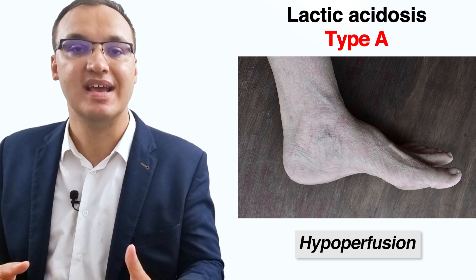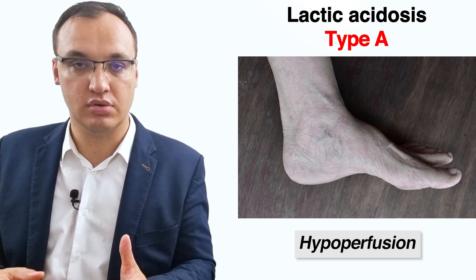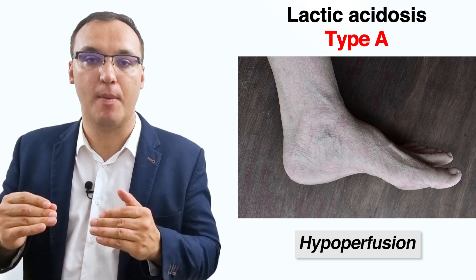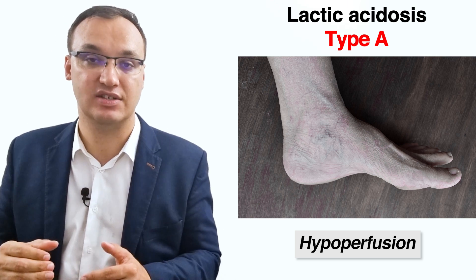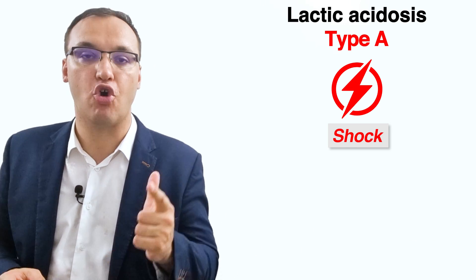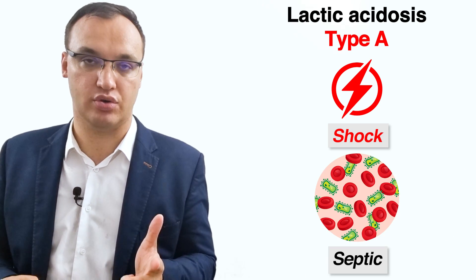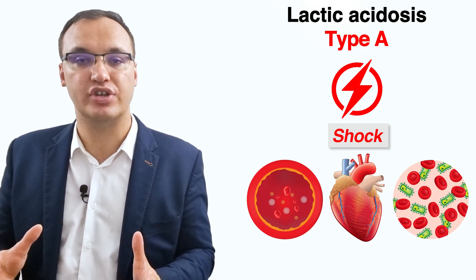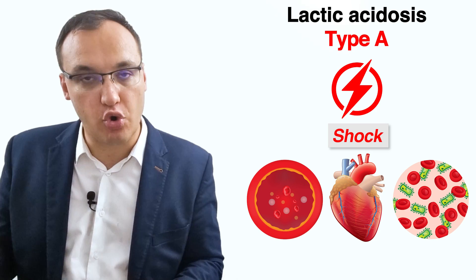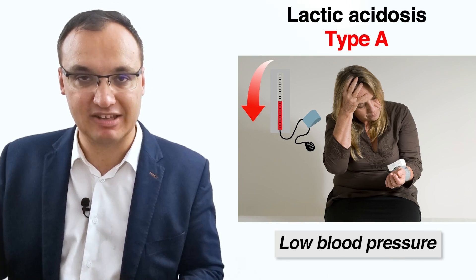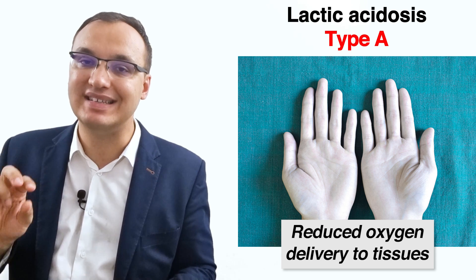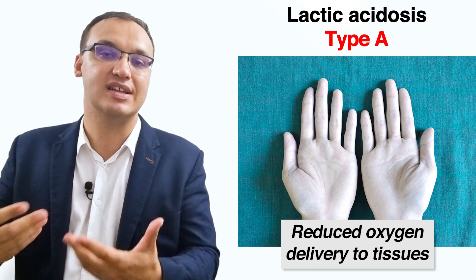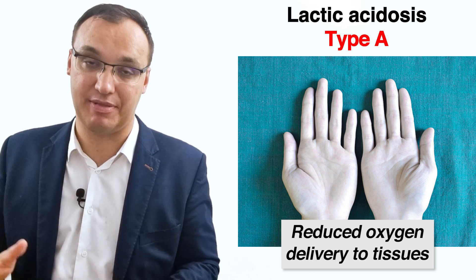In type A lactic acidosis, lactic acid accumulates due to tissue hypoperfusion. Hypoperfusion describes a reduced amount of blood flow. The cause of hypoperfusion in type A lactic acidosis is usually shock — either hypovolemic, cardiogenic, or septic shock. Shock is a life-threatening condition in which blood flow to the organs is decreased, blood pressure is usually low, and there is reduced oxygen delivery to the tissues, causing organ damage and sometimes death.